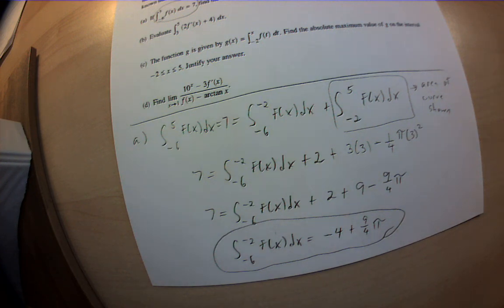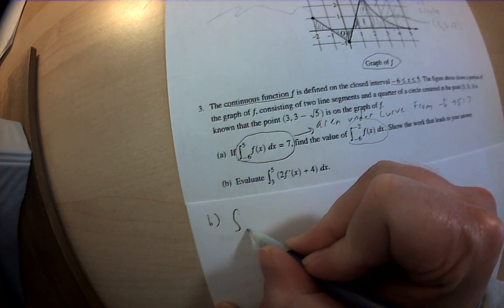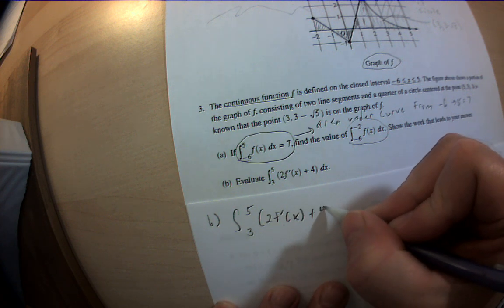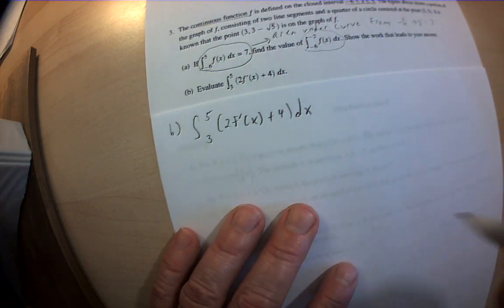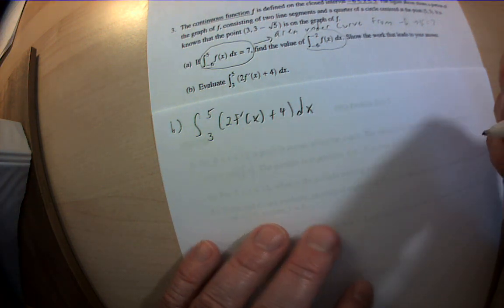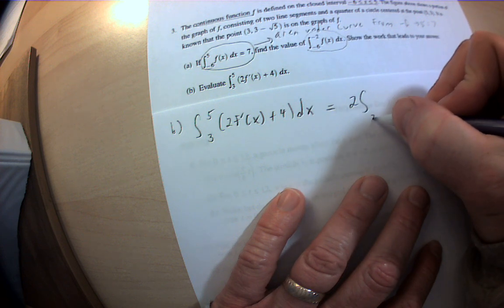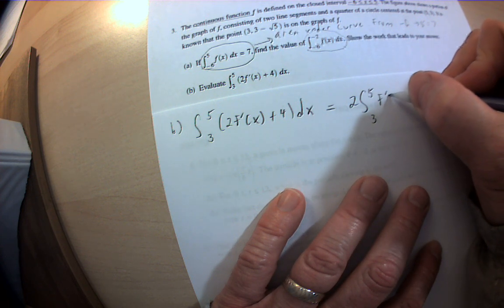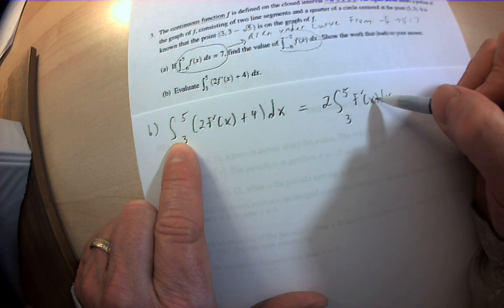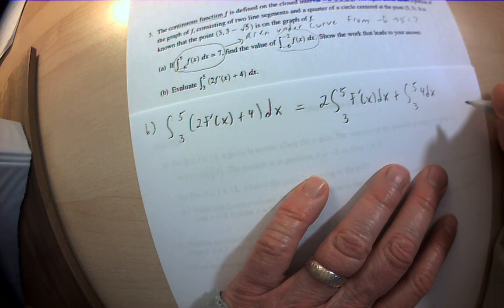Part B. They want the integral from 3 to 5 of 2f'(x) plus 4 dx. If you see a derivative inside an integral, you should be thinking fundamental theorem of calculus. They're inverses of each other. I'm going to break this up a little bit. The integral from 3 to 5 of f'(x) dx. I just factored the 2 out. So I've got the integral from 3 to 5 of f'(x) dx, plus the integral from 3 to 5 of 4 dx. That's a constant.